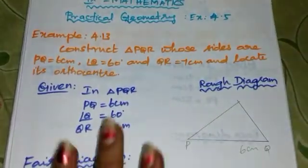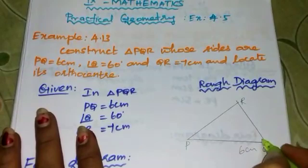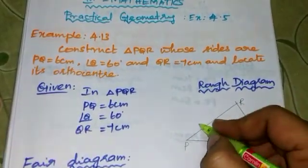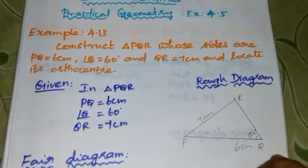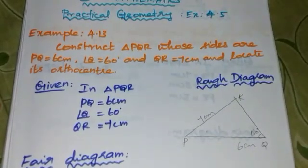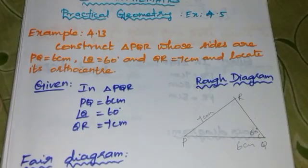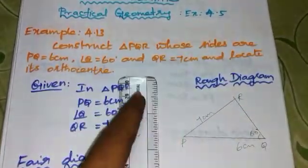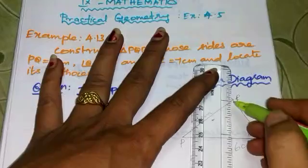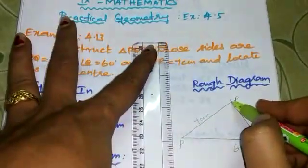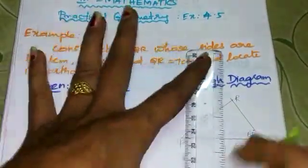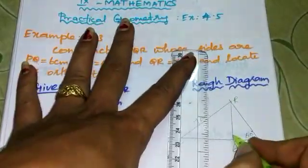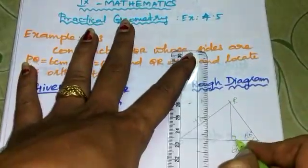This is the rough diagram with QR equal to 7cm. Now we will draw the fair diagram. The orthocenter is the point of concurrency of altitudes. An altitude is drawn from one vertex perpendicular to the opposite side of the triangle.